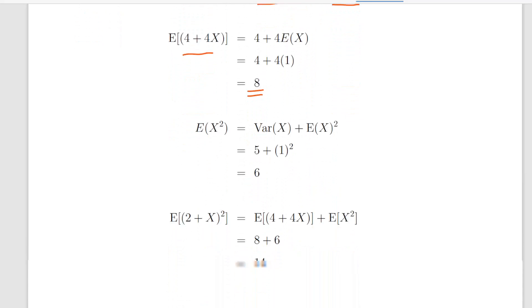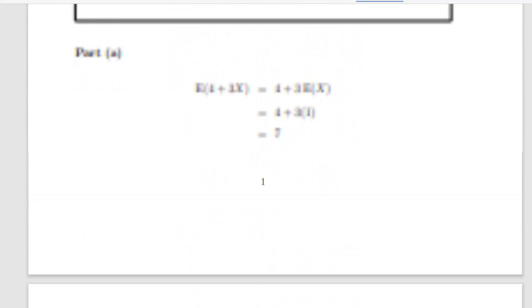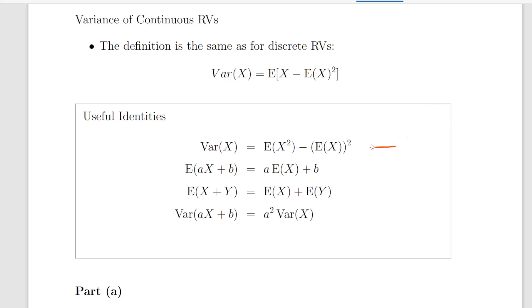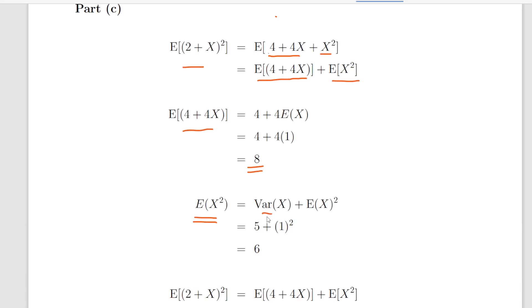The expected value of X squared requires a little bit of lateral thinking. We're going to re-express one of the identities algebraically. We add the expected value of X to be squared to both sides. We get the variance of X plus the expected value of X to be squared. That's 5 plus 1 squared, which gives us 6.